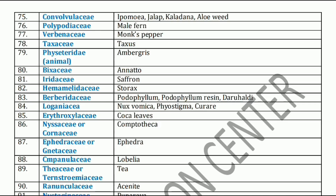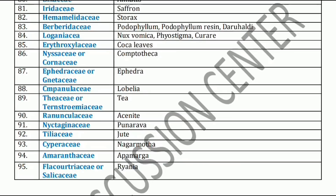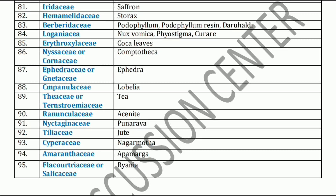Next family is Berberidaceae family. Berberidaceae family has Podophyllum, Podophyllum resin, and Daruharidra. Next family is Loganiaceae family. Loganiaceae family includes Nux vomica, Physostigma, and Curare. Now the next family is Erythroxylaceae family, which includes Coca leaves. Next family is Nyssaceae family. Nyssaceae family has Camptotheca. Next, Ephedraceae family. Ephedraceae includes Ephedra.